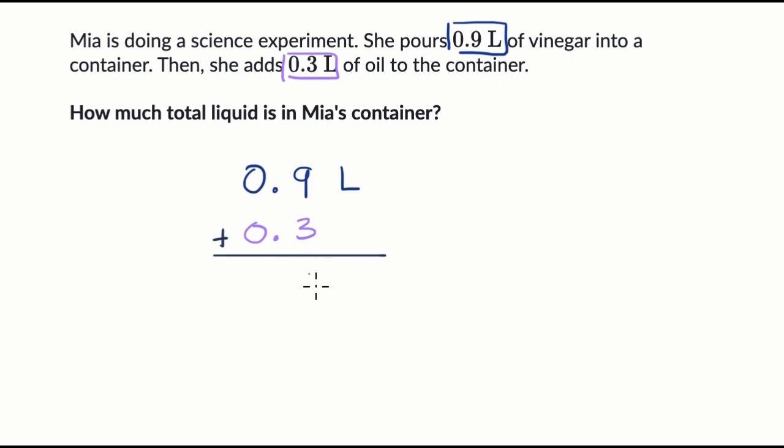Now I can't write 12 tenths in the tenths place, but I could write that 12 tenths is the same thing as two tenths and a whole. Another way to think about it, it's the same thing as 1.2 if you have 0.9 plus 0.3.